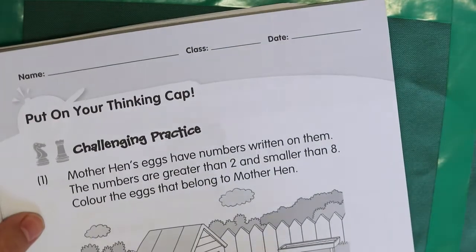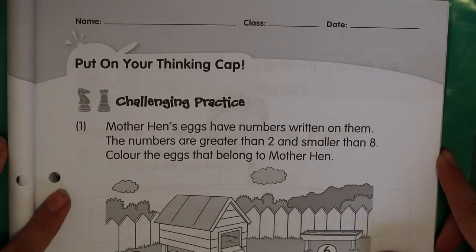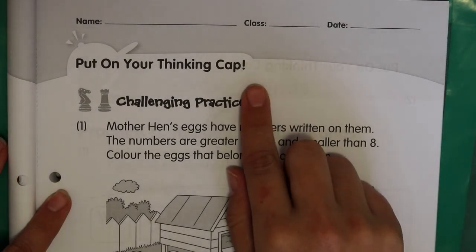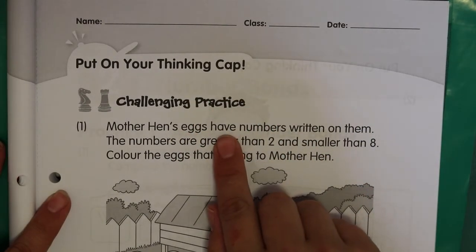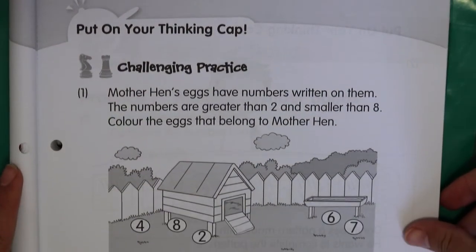We turn over to page 19. Now 19 says put on your thinking cap. That means it's a little bit of a challenge. It means you need to think carefully while we do this one. And it means it's not going to be easy. But I know that you guys can do this. Challenge.